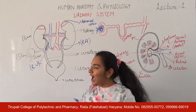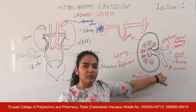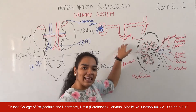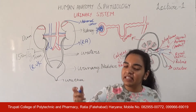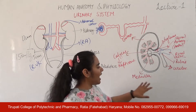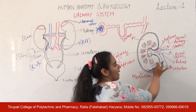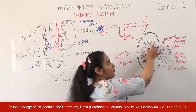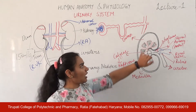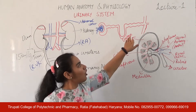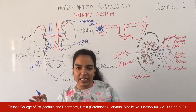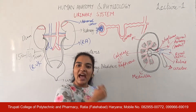Now we will study the physiology and anatomy of the kidney. Our kidney has two major parts. The external portion of the kidney is the cortex, and the inner portion where filtration actually occurs is the medulla. The cortex is the outer region and the columns extend inward.